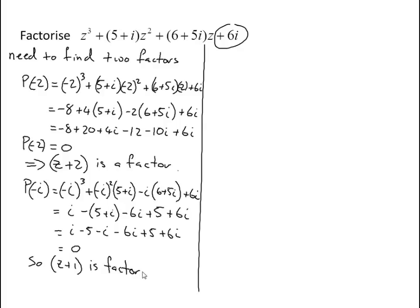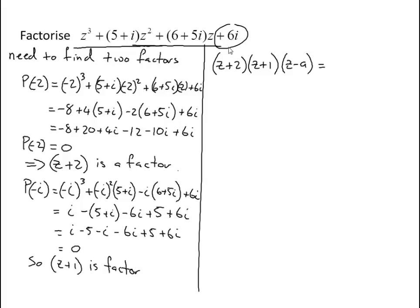Now we're ready to do our equating coefficients. We're saying: z plus 2 times z plus i times z minus a should equal z cubed plus (5 plus i)z squared plus (6 plus 5i)z plus 6i. I'm interested in the last times the last times the last: 2 times 1 times minus a gives minus 2a, and that equals 6i — equating the constant term.